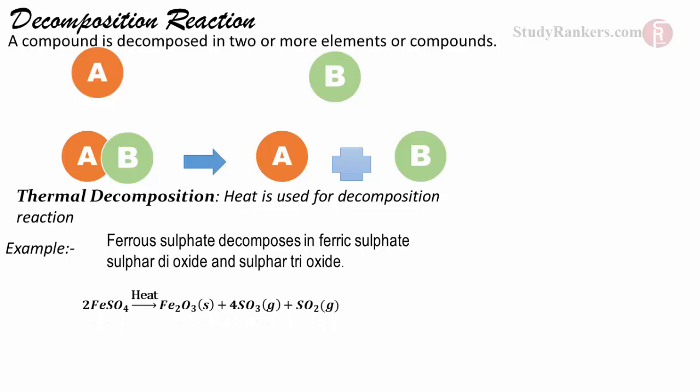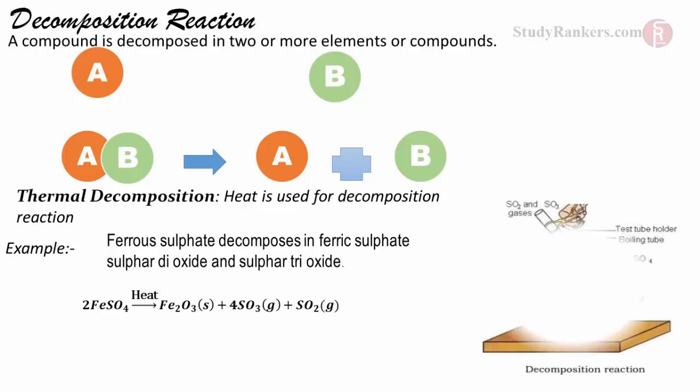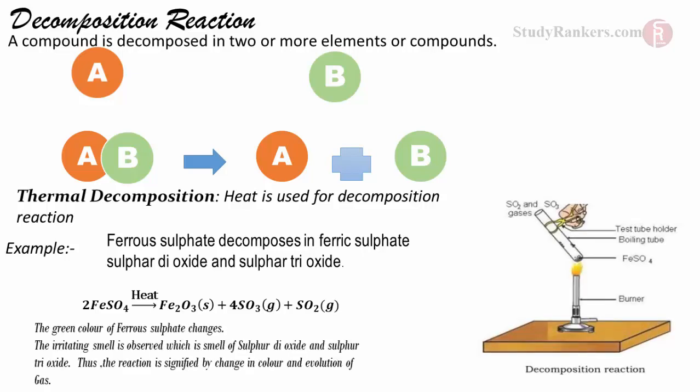2FeSO4 when heated gives Fe2O3 and releases SO3(g) plus SO2(g). The reaction is signified by the presence of sulphur dioxide, whose presence can be felt by a very bad smell — like the smell of a rotten egg or raw turned apple.